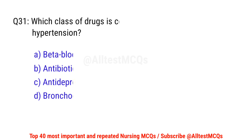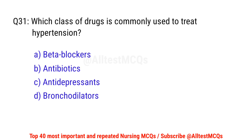Question No. 31: Which drug is commonly used to treat hypertension? The right option is A: Beta blockers.